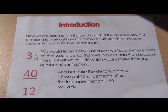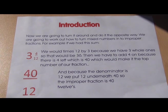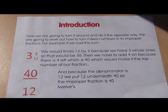Now we are going to turn it around and do it the opposite way. We are going to work out how to turn mixed numbers into improper fractions. For example, if we had this sum, we would times 12 by 3 because we have 3 whole ones, so that would be 36. Then we have to add on 4 because there is 4 left, which is 40, which would make it the top number of our fraction.